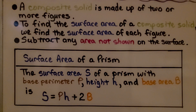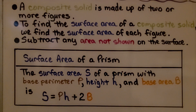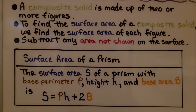We subtract any area not shown on the surface. The surface area formula for a prism with base perimeter p, height h, and base area b is: s = ph + 2b. That means the surface area equals the perimeter multiplied by the height, plus 2 times the base area.